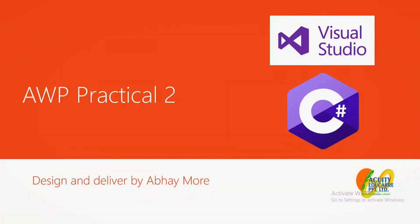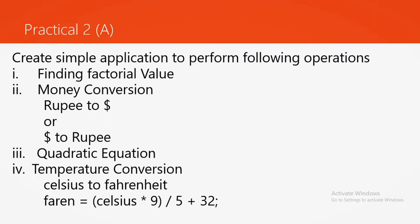Welcome class. I will begin the video series. In Practical 2, I will be conducting Practical 2A - AWP vs CID. What is expected in Practical 2A is creating a simple application to perform the following operations: finding the factorial value, money conversion (considering the currency as dollar, so rupee to dollar and dollar to rupee), quadratic equations, and temperature conversion using Celsius to Fahrenheit.